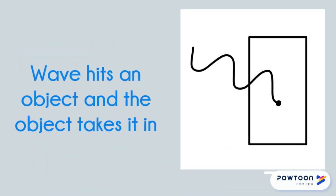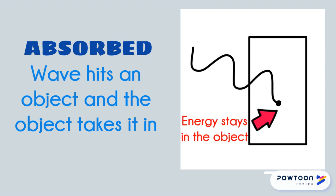Finally, when a wave hits an object and that object takes it in, we say that it has been absorbed. The light energy stays in the object and is used to do different things. Most commonly, it will heat the object up by making the particles move faster.